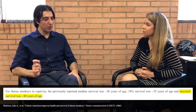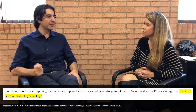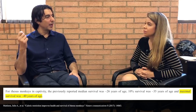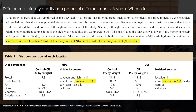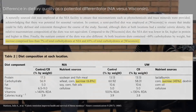The Wisconsin study had a control diet that was much worse than the NIA control diet. The NIA had something of an ideal monkey diet, while the Wisconsin control diet was a reasonably good model for the Western diet. There were also probably some different genetic backgrounds between the monkeys across the two studies.